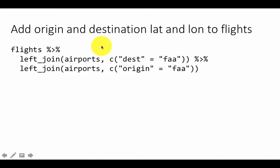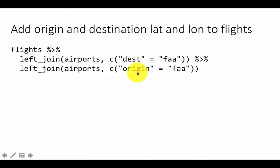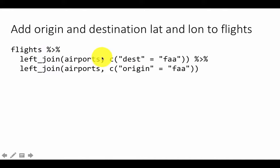The main point here is that we have to join the airports table twice — once to the destination field to get the destination details like latitude, longitude, etc., and once to the origin field to get the origin details. So we do flights left join airports and we first join where the flights destination equals airport FAA.